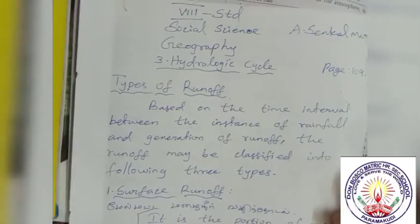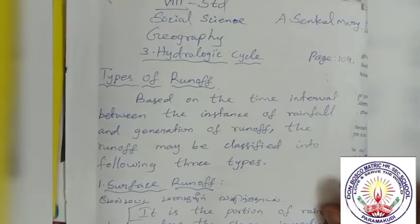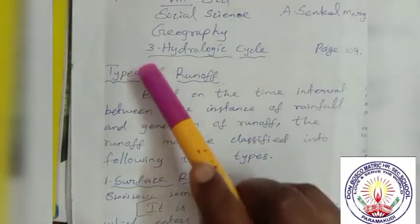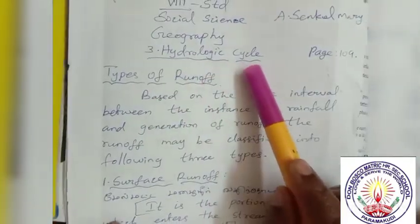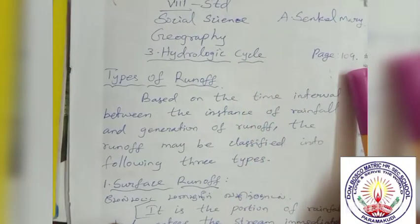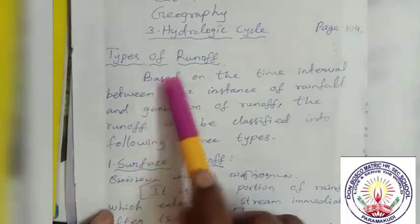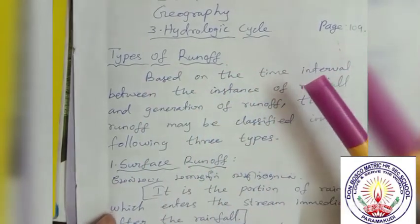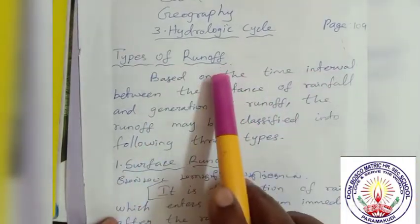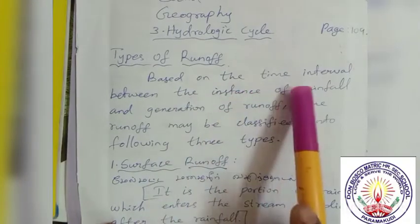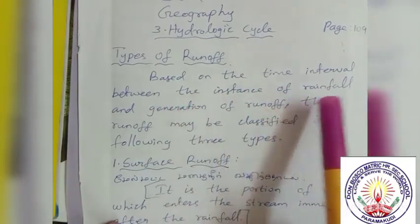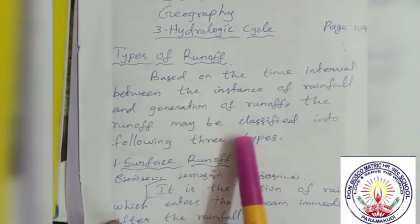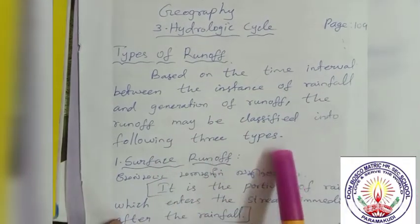Good morning students. 8th Standard Social Science Geography Lesson 3: Hydrologic Cycle, Page 109. Types of Runoff. Based on the time interval between the instance of rainfall and generation of runoff, the runoff may be classified into the following three types.